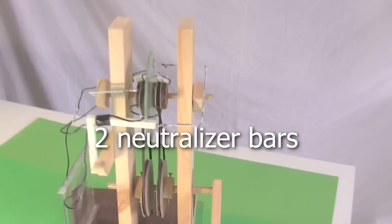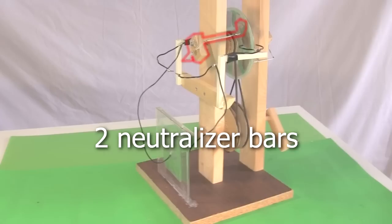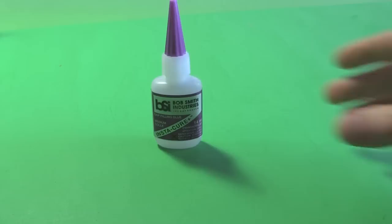We'll also need two neutralizer bars, one in the back and one in the front, and lastly a spark gap, a capacitor, two collectors, and the wiring to connect them all together.